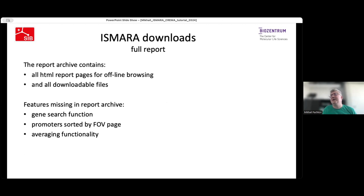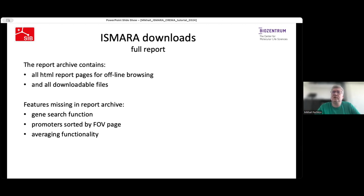Finally, you can download the full report as a TAR archive containing all report HTML pages, pictures, and downloadable files. These web pages have almost the same functionality — interactive pictures, sortable and searchable tables. The features missing in the local copy of the ISMAR report are: the gene search function, the page with promoters sorted by fraction of explained variance, and the sample averaging functionality.